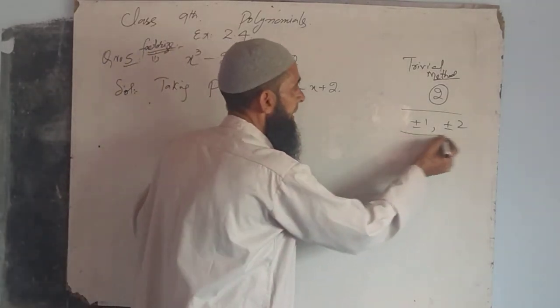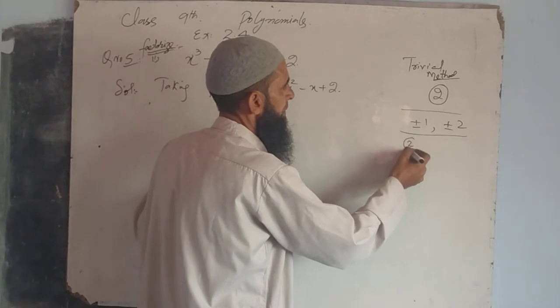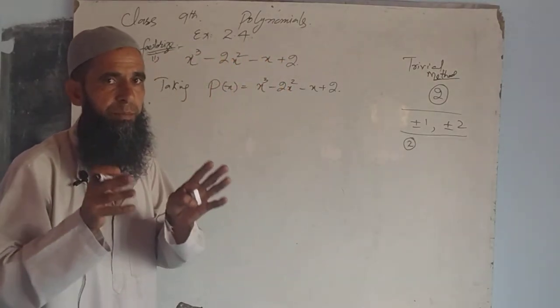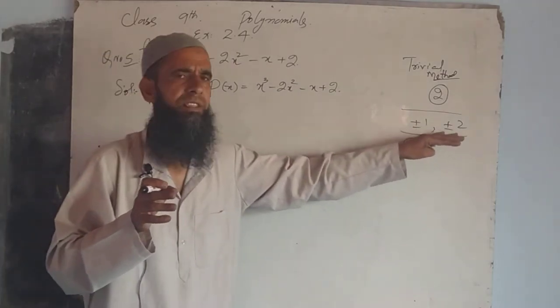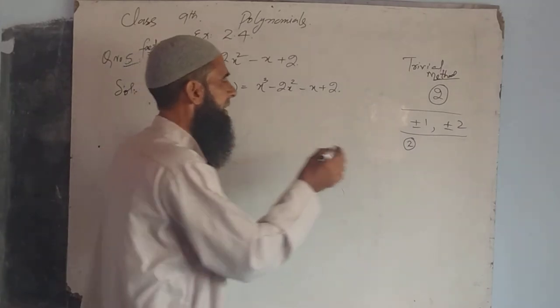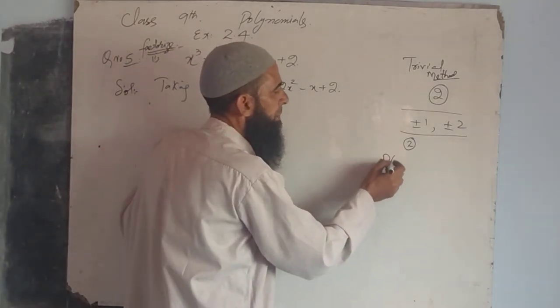Now here we are taking plus two. First we take plus two in the trivial method. We can take any value - you have to choose from these. Let's check plus two. We see here P(2).